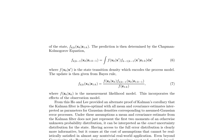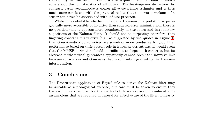The paper discusses the Kalman filter, a widely used algorithm in signal processing and control systems, and its relationship with Gaussianity. The authors argue that the Bayesian interpretation of the Kalman filter, often presented in textbooks and introductory expositions, can lead to misconceptions about the filter's performance. Specifically, the Bayesian derivation implies that Gaussian-distributed noises are somehow more conducive to good filter performance, which is not necessarily true. The authors highlight that the Kalman filter is actually MMSE optimal, meaning it minimizes the mean squared error between the estimated and true states, without any assumptions of Gaussianity.